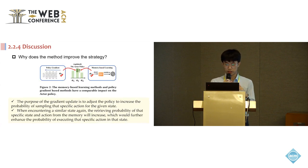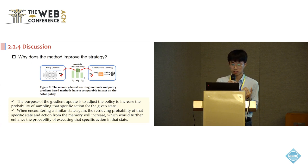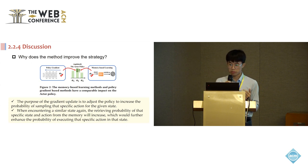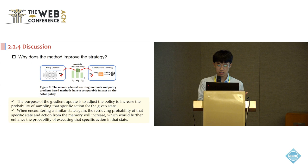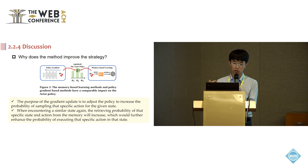An important question is why in-context learning methods can improve the policy. Taking policy gradient as an example: the purpose of a gradient update is to adjust parameters to increase the probability of sampling a specific action — in this example, action 2 for a given state s. If we use in-context learning, we can store the state-action pair (s, a2) in a memory bank. When encountering a similar state again, we retrieve that pair from the memory bank and use it as a prompt for our large language model, enhancing the probability of executing that specific action. This is how in-context learning can also improve the strategy.